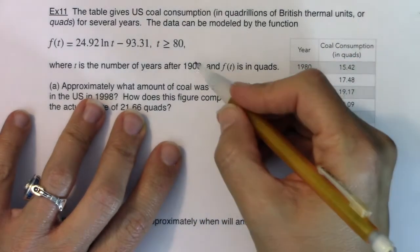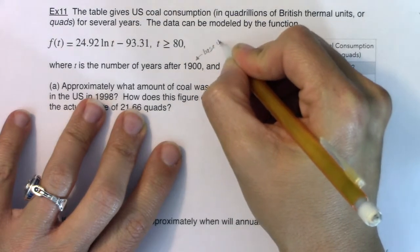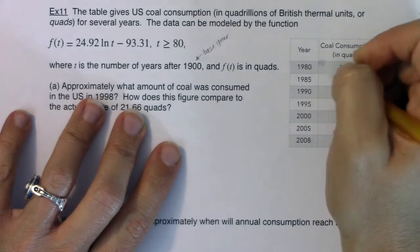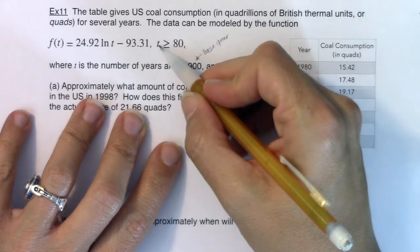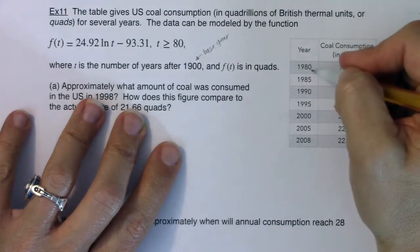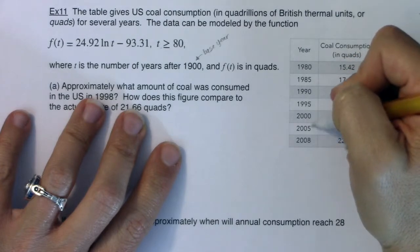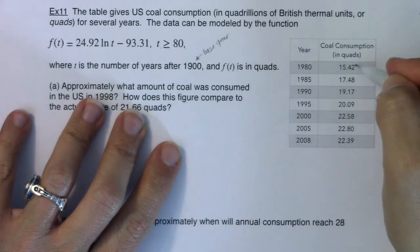And t is the number of years after 1900 and f(t) is in quads. So it looks like there's my base here, I'm going to take note of that. And if the years I started keeping track of coal consumption is 1980, that's why I have this domain cutoff of t has to be greater than or equal to 80. Because we're saying we only know this information as long as t is greater than or equal to 80. So it looks like as years are increasing, it looks like my coal consumption is also increasing.